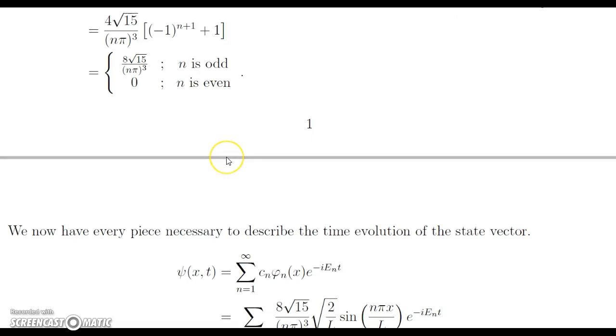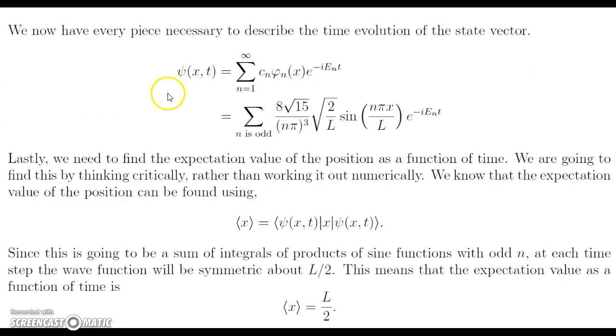So this looks a little nasty at first, but this is actually going to make our life a lot simpler now when we're looking at the expectation value. But before we do that, let's first define what our time evolution state vector looks like. We have that ψ(x,t) is equal to the sum of our expansion coefficient times the energy eigenstate φn, and then this is multiplied by e^(-iEnt/ℏ), where En is the energy eigenvalue. And since here it's 0 every time it's even, we just have the sum when n is odd times 8√15 over the quantity (nπ)³, all times √(2/L) sin(nπx/L) times e^(-iEnt/ℏ).